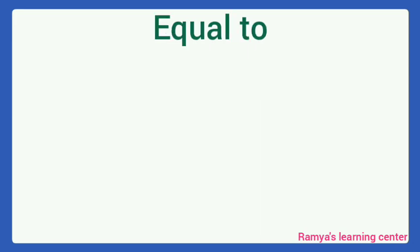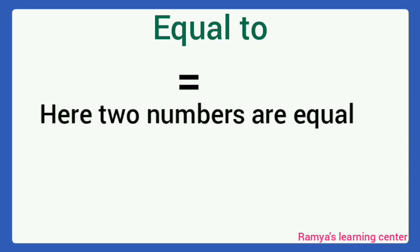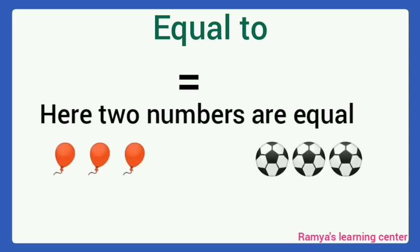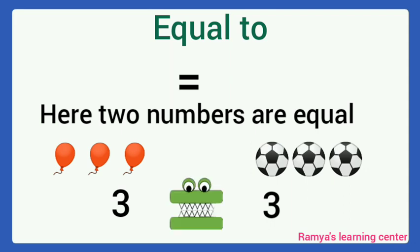Next, equal to. This is the equal to symbol. Here, 2 numbers are equal. For example, how many balloons are here? 1, 2, 3. How many balls are here? 1, 2, 3. Here, the number of balloons and number of balls are equal. The alligator mouth remains closed. We put the same symbol. This is equal to.